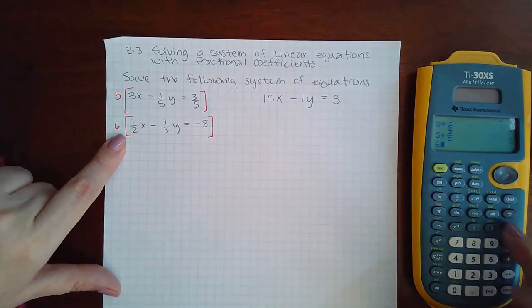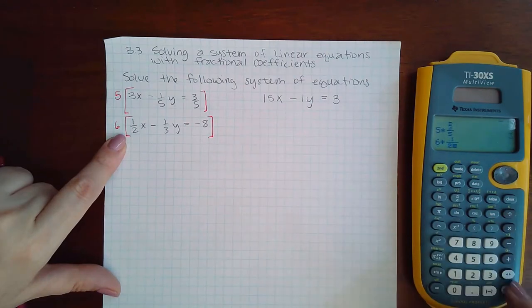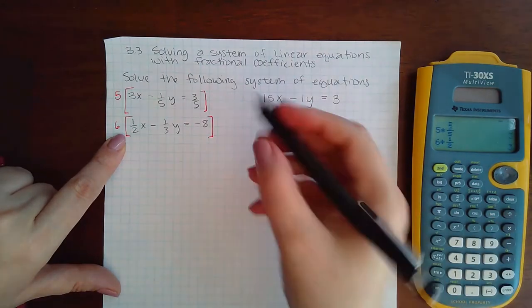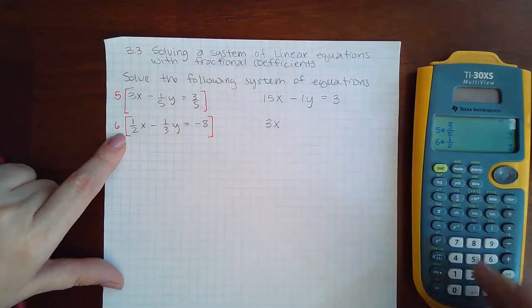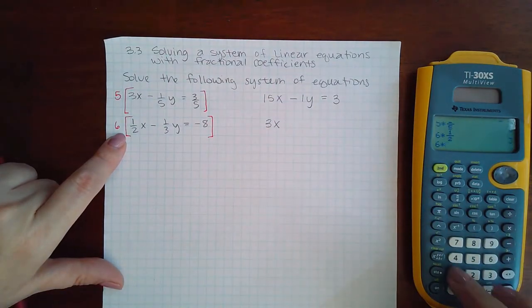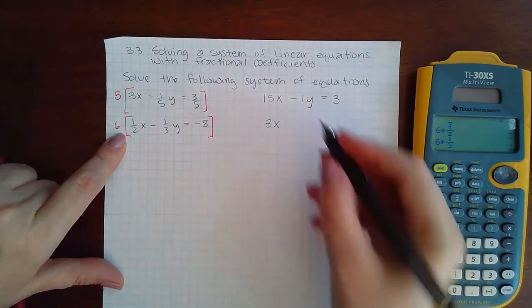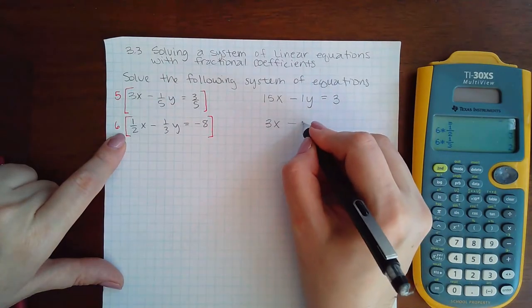The bottom one becomes 6 times 1 half. I could do this in my head, but if you need to, you can do it in the calculator. 3x, and then 6 times 1 third, keep the minus sign, I get 2y, and then 6 times negative 8 is negative 48.